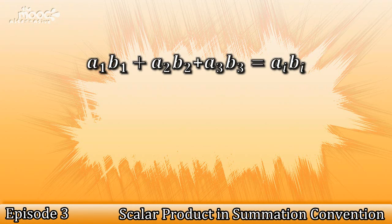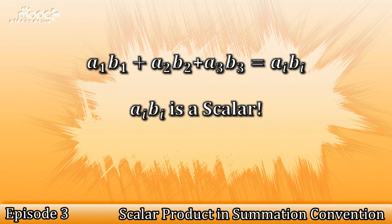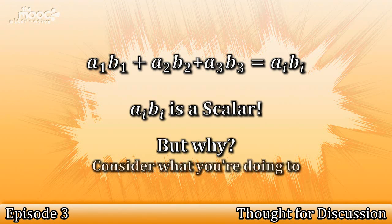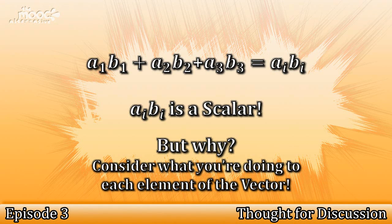The most important thing to note about Ai Bi is that it is a scalar. Can you understand how we started with a first order tensor, or a vector, and turned it into a scalar? Consider what we're doing to each element of the vector in your explanation.